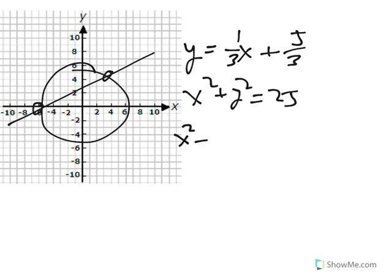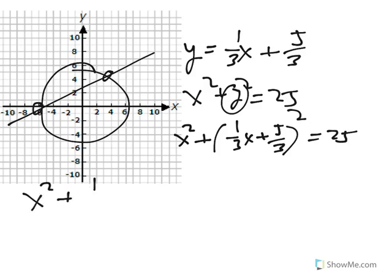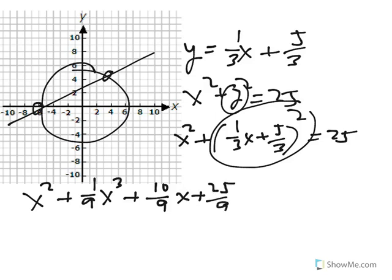One-third x plus five-thirds squared. And this takes, you've got to be careful as you do this when you expand that, the one-third x plus five-thirds squared. You end up with one-third times five-thirds is five-ninths. That's 10 over 9x plus 25 over 9. 1x squared plus 1-ninth x squared is 10 over 9.